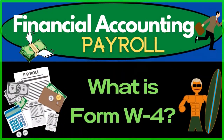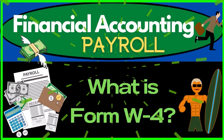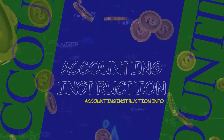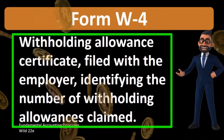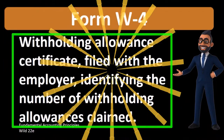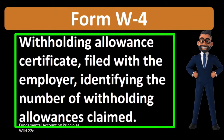Hello, in this lecture we will define form W-4. According to Fundamental Accounting Principles, Wild 22nd edition, the definition of W-4 is a withholding allowance certificate filled out with the employer, identifying the number of withholding allowances claimed.